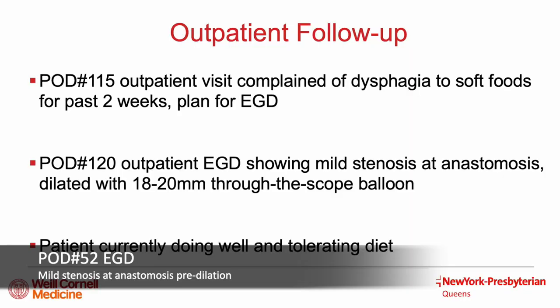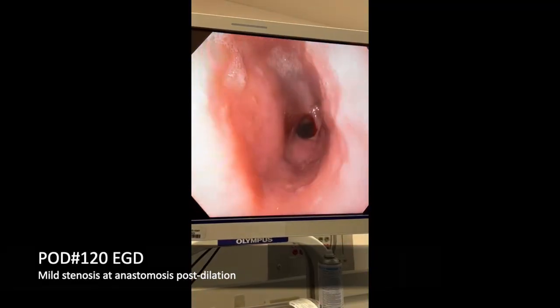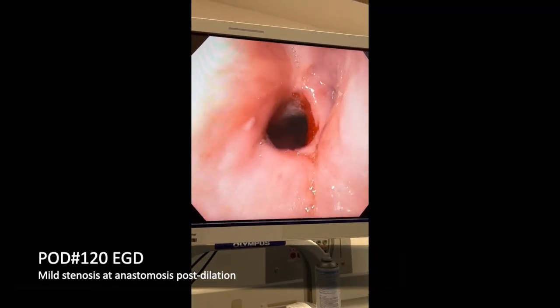The patient initially did well post-dilation; however, on a further outpatient visit on postoperative day 115, he again complained of dysphagia for the preceding two weeks. On postoperative day 120, he underwent outpatient EGD, showing a mild stenosis at the anastomosis. This was dilated with an 18 and 20 mm through-the-scope balloon. The patient is currently doing well and continues to tolerate the diet. Here is the endoscopy showing the mild stenosis at the anastomosis post-dilation.